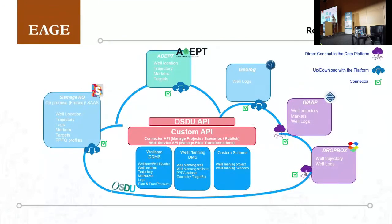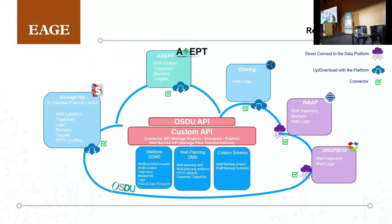Concretely, what was done? The scope of the project was limited to well data. You can see on the slide which data types are covered in each connector. Some softwares used an upload/download principle and some were directly plugged into Azure. For SysMaj, Adept, Geolog, IVAP, and Dropbox, it was the well data. Within SysMaj and Adept, we also used the exchange of a custom data type — the scenario — which we introduced ourselves to fit our business need, as it is an aggregation of different data types: well location, trajectory, well marker targets, and the pore pressure fracture gradient profile.